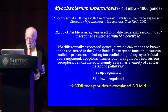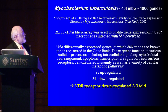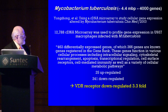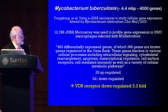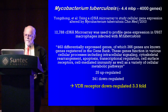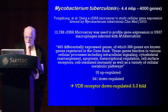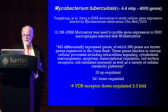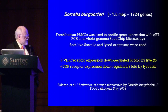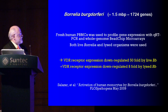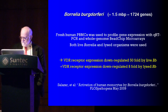Looking at specific pathogens that do this: Mycobacterium tuberculosis, a persistent infection in latent TB, knocks out the VDR — in one study it was downregulated about 3.3-fold. We now know why MTB knocks out the VDR, involving a protein called TECO. Borrelia spirochetes also downregulate the VDR nuclear receptor by 50-fold.